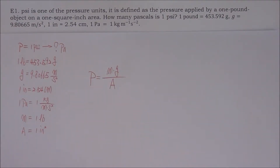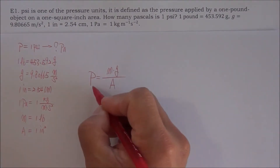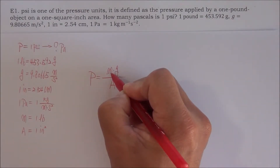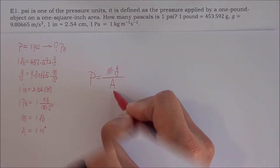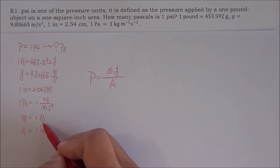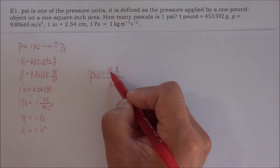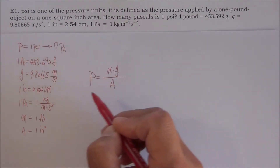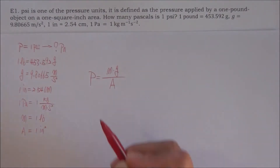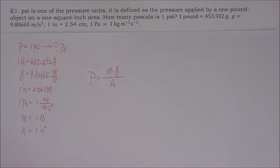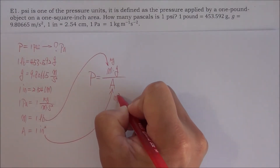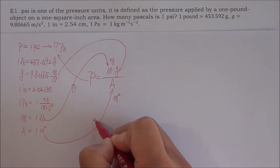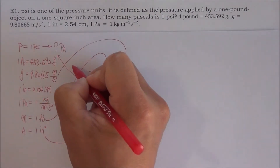In order to get Pascal as the unit of pressure, the mass has to be in kilograms and the area has to be in meters squared. As long as we can convert the mass to kilograms and the area to meters squared, and since we also know g, we can calculate the pressure in Pascal. This will be our first step, second step, and third step.